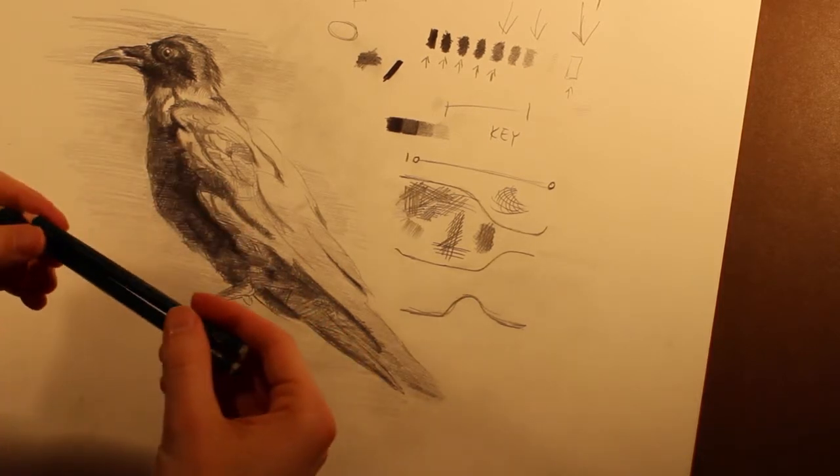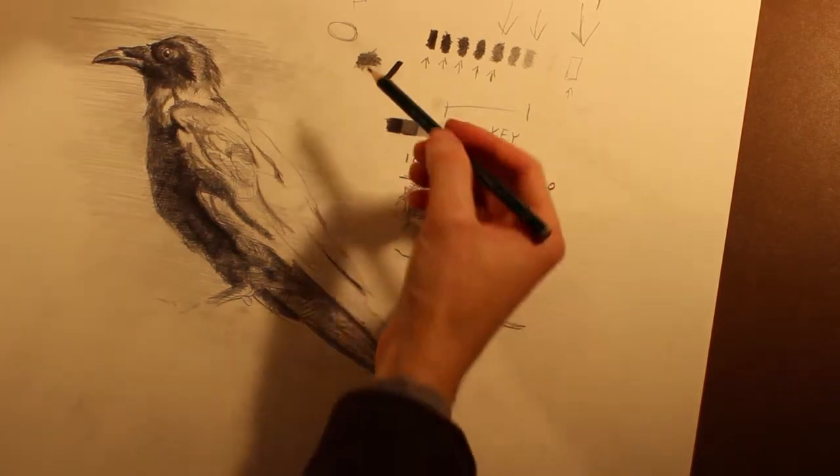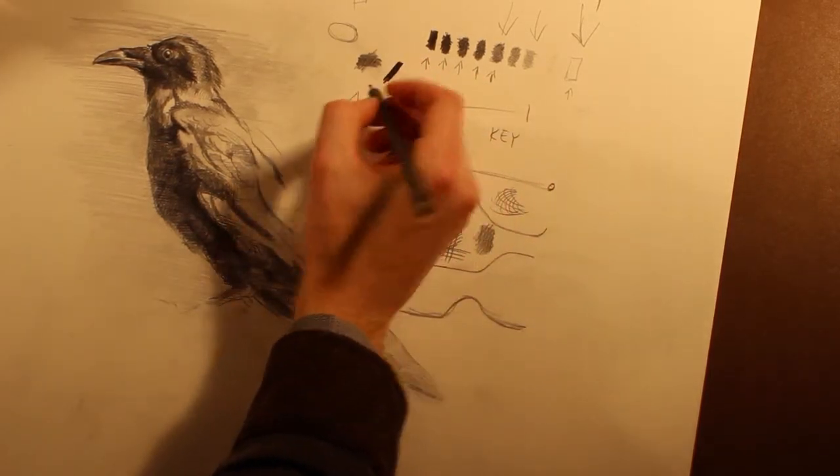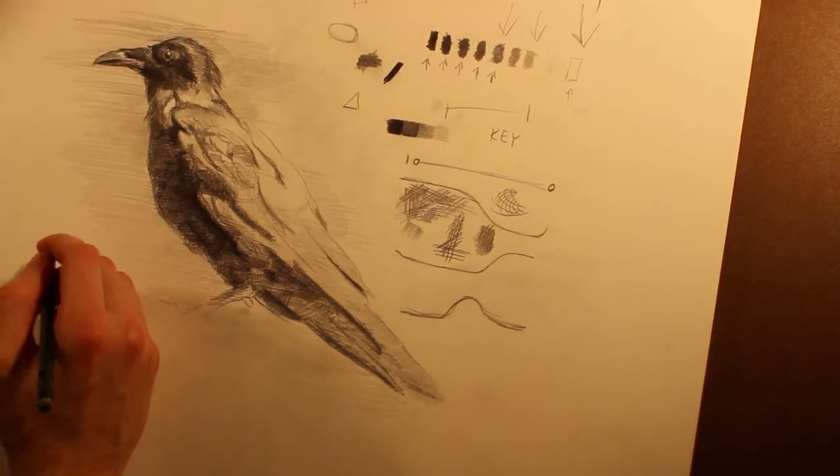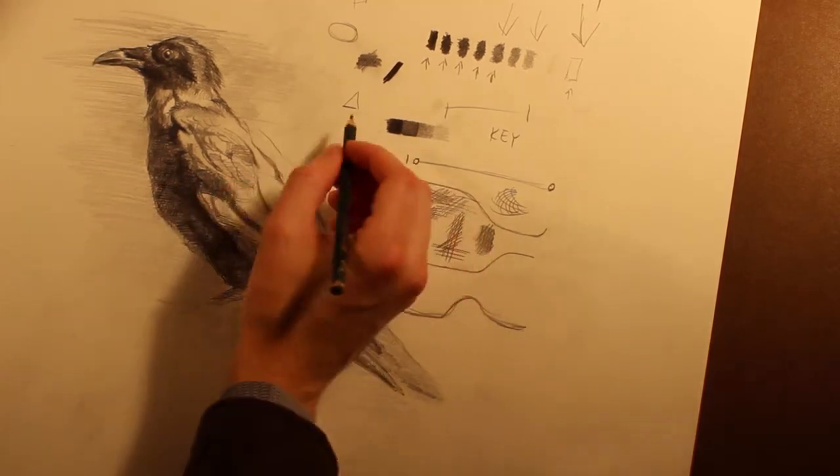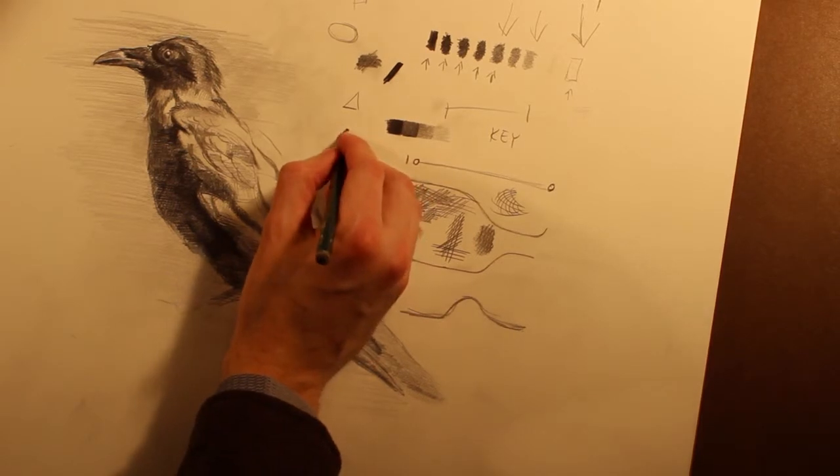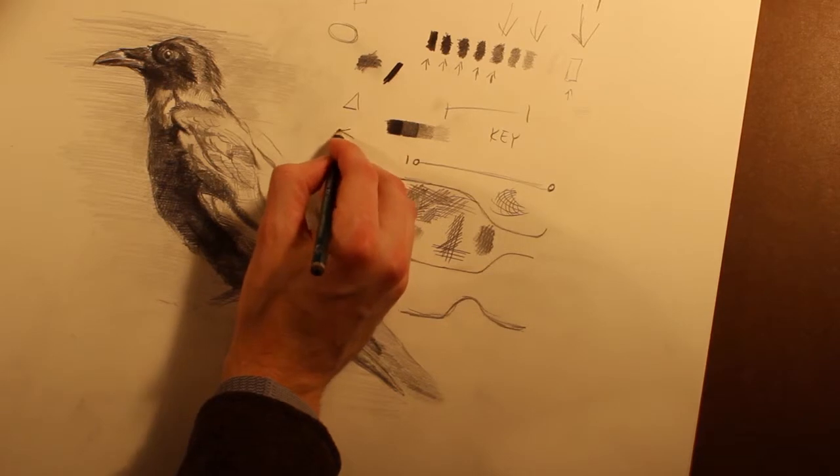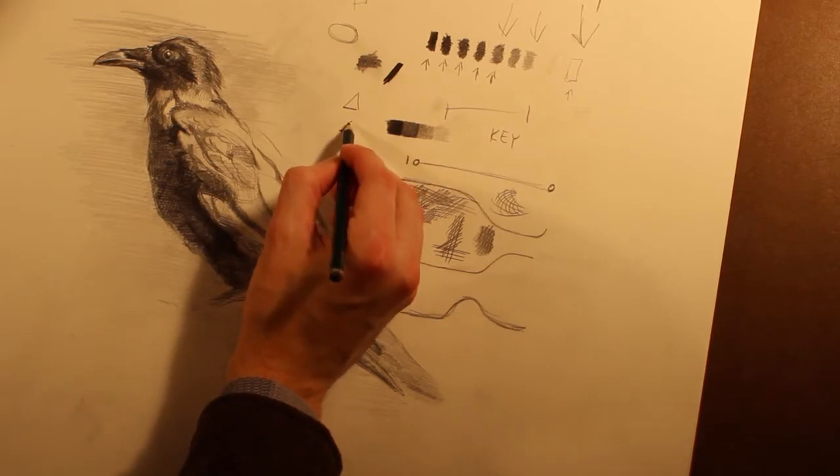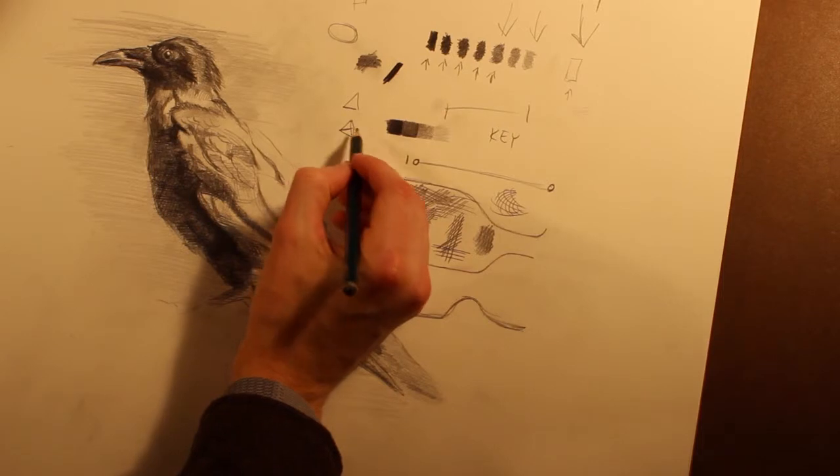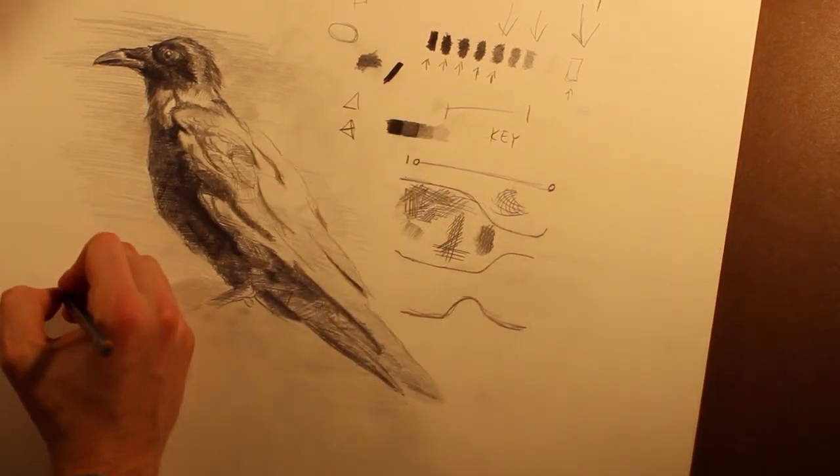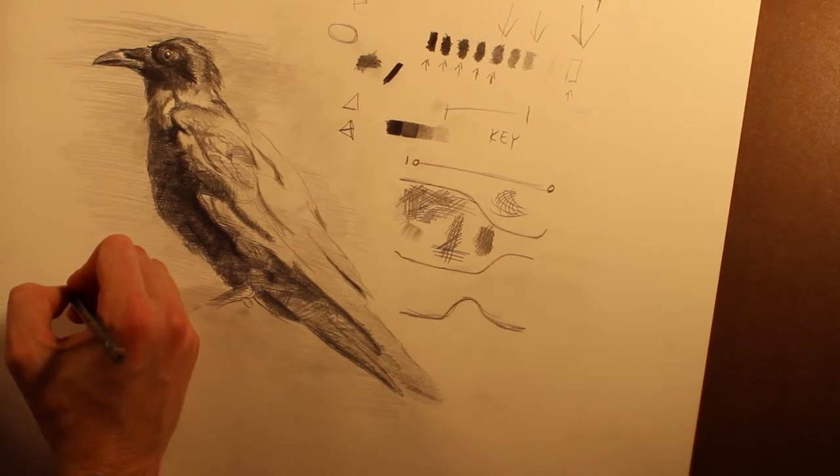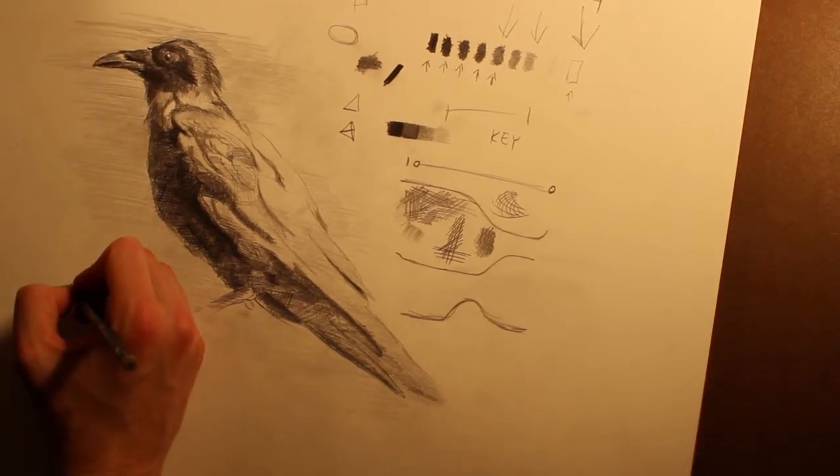So, a shape, say, would be a triangle. It exists as a two-dimensional thing on a page. A form would be like a tetrahedron - four triangles put together, the simplest three-dimensional shape with planes.